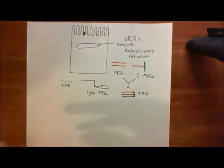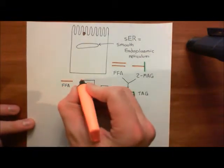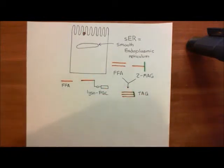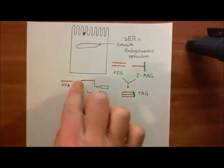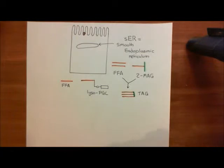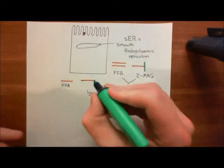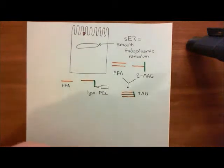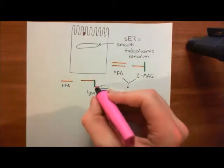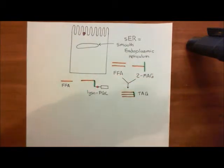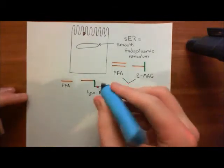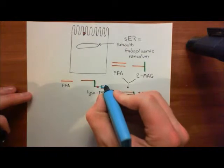So here's our lysophosphoglycerolipid, which has a long-chain carboxylic acid here, and here's our glycerol molecule in green. Here's our phosphate group coming off the third alcohol group of the glycerol molecule, and here is the head of the phosphoglycerolipid here in blue.